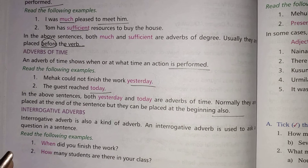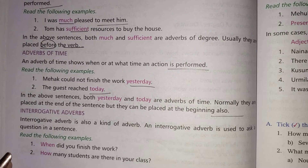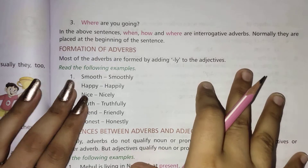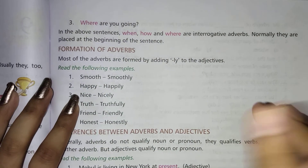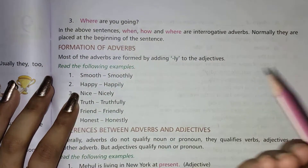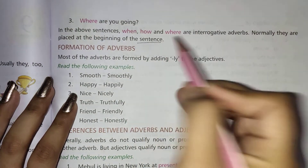More examples: 'How many students are there in your class?' and 'Where are you going?' In the above sentences, 'when', 'how', and 'where' are the interrogative adverbs. Normally they are placed at the beginning of a sentence.